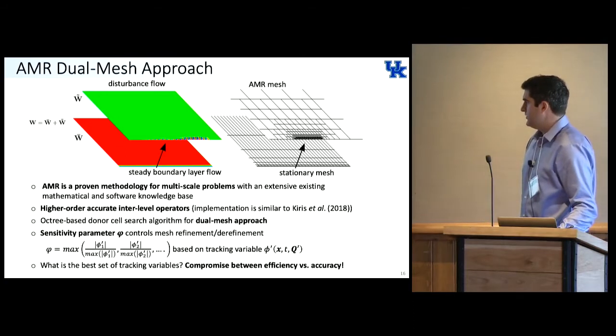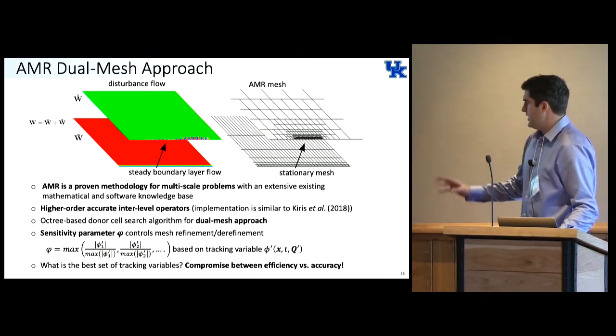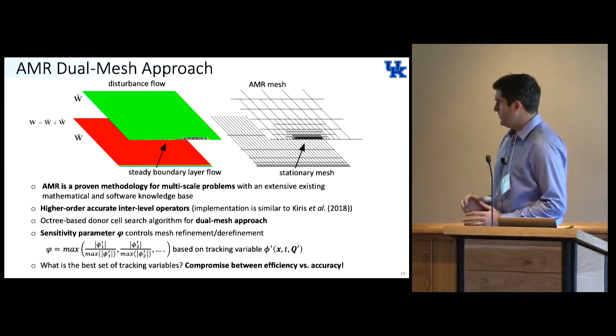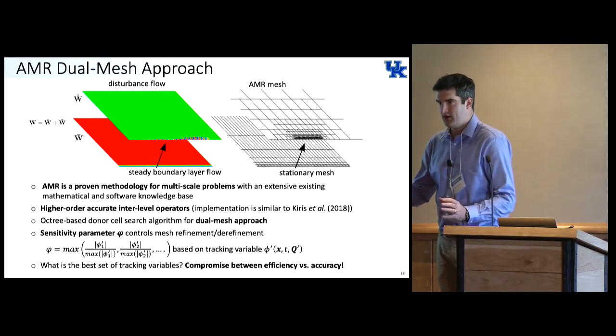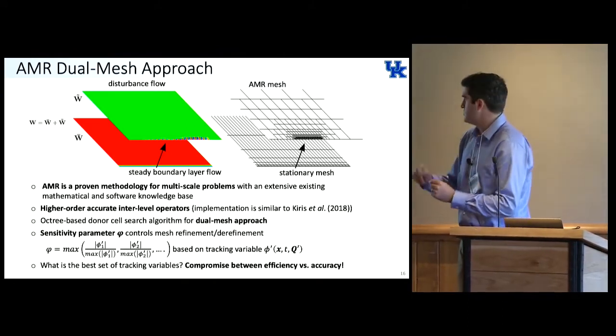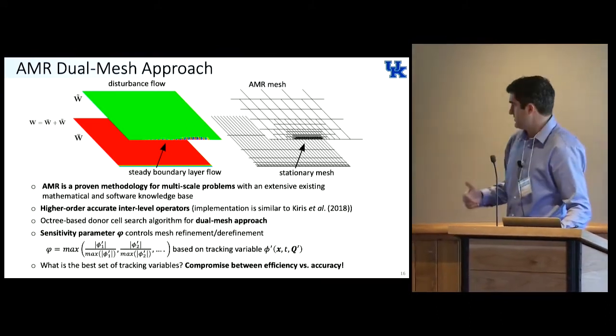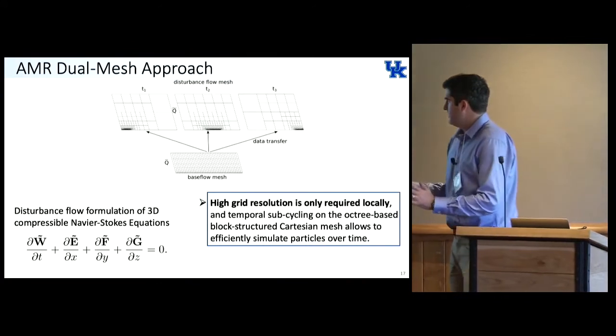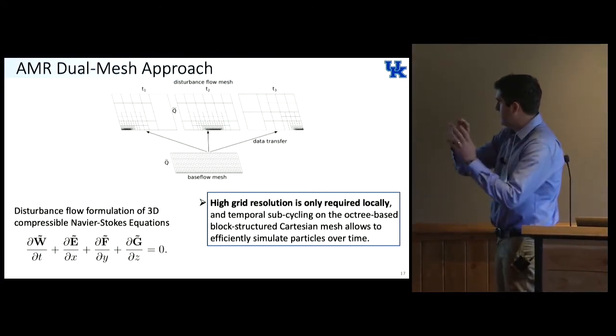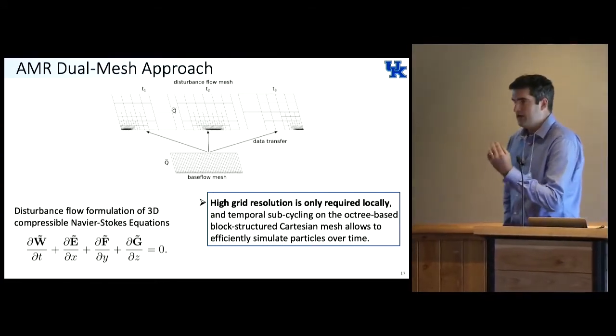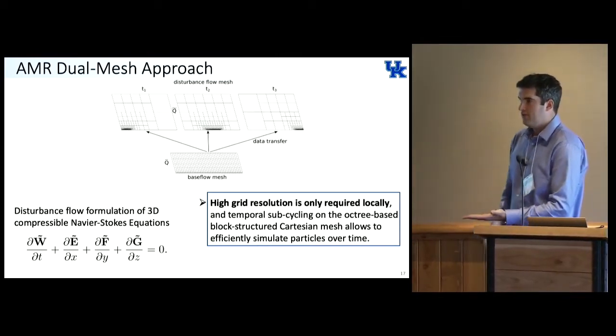This is the idea behind it. AMR has been used for plenty of cases. Where the battle is won and lost with this method is how do we track the wave packet efficiently? What parameter do we use to tell the algorithm you can take away mesh or add mesh? It's generally a compromise between efficiency and accuracy. This gives you a bit of a schematic at different time instances as the wave packet is propagating downstream. The adaptive mesh refinement is following it, and the base flow terms are interpolated up from the static mesh.